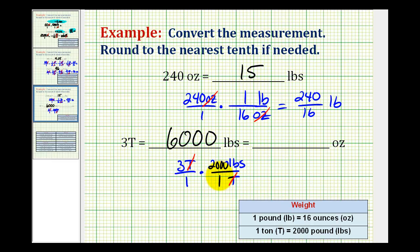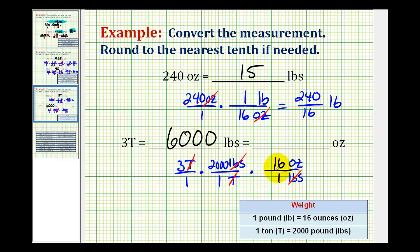Now we want to convert 6,000 pounds to ounces, so we'll add one more unit fraction. We'll convert pounds to ounces using the conversion one pound equals 16 ounces. The units of pounds simplify out, giving us a total number of ounces: 6,000 times 16 equals 96,000. So we have 96,000 ounces.